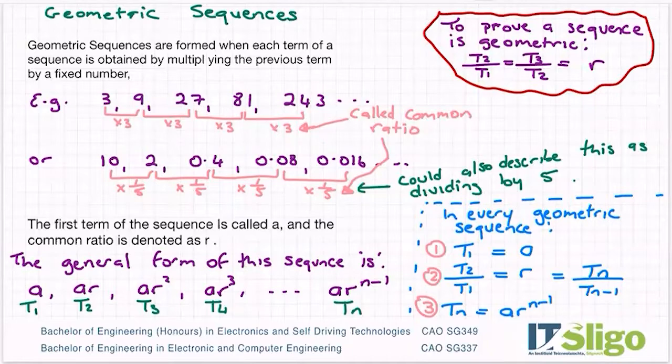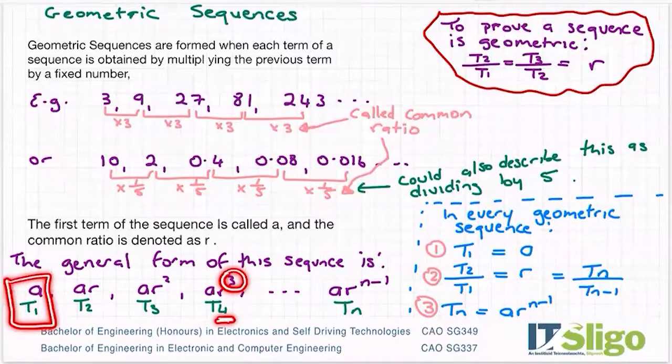You can say that the general form of a sequence is a, ar, ar squared, ar cubed, dot dot dot, ar to the power of n minus one. I've written under it in green the terms: t1, t2, t3, t4, all the way up to tn. Let's have a look at the pattern for t2. I get t2 by multiplying the first term by the common ratio. I get t3 by multiplying ar by r again, and ar by r is ar squared. I get t4 by multiplying ar squared by r again, and you can see that's where the r cubed comes out of. So your power is always one less than the term that you're on. That's because the first term didn't have an r in it at all - it was just a, the first term.